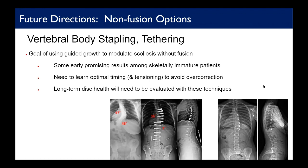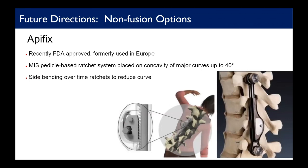Another new technology is the FEST device — an apical device placed on the concavity. It's dynamic with a ratcheting mechanism: placed at the apex of the curve, it ratchets with lateral bending away from the concavity, growing with the patient over time and maintaining correction. It's a very interesting device for addressing scoliosis without fusion, though larger studies on outcomes are still needed.